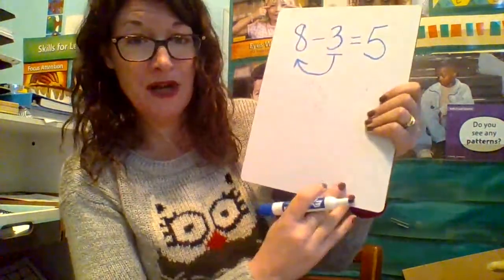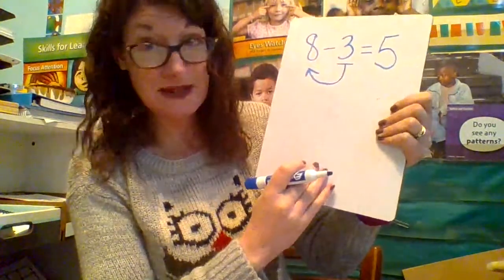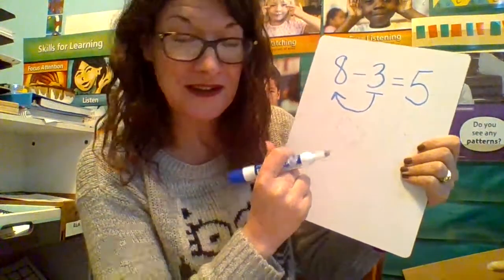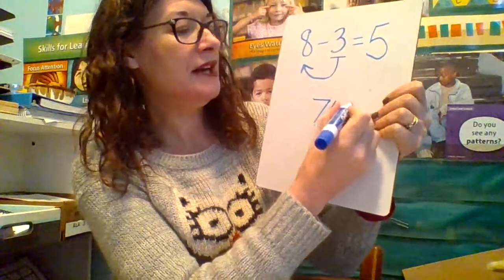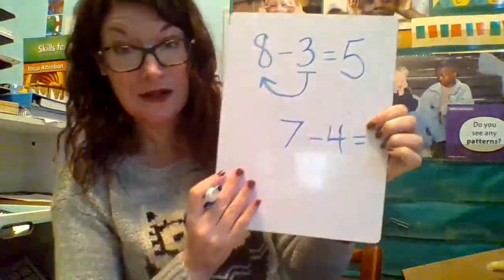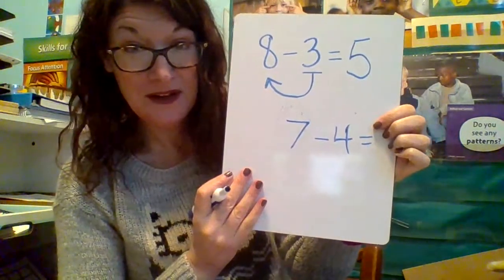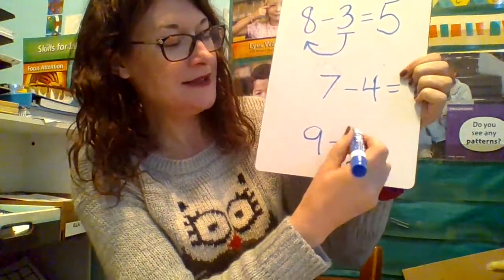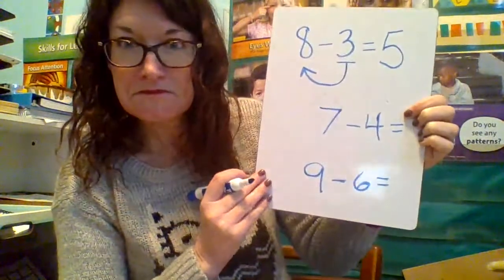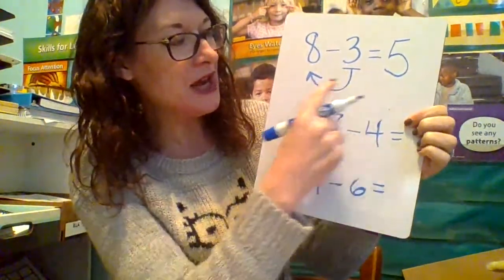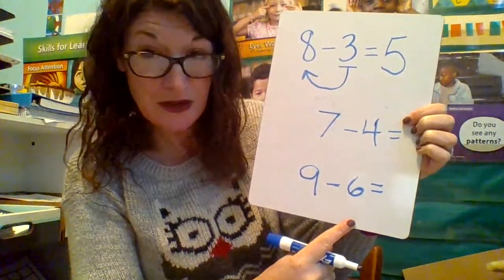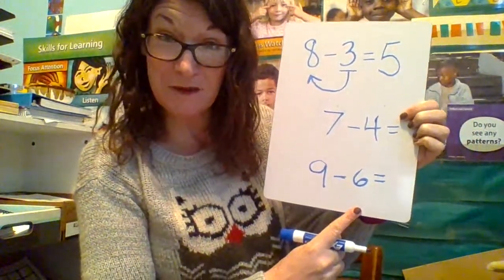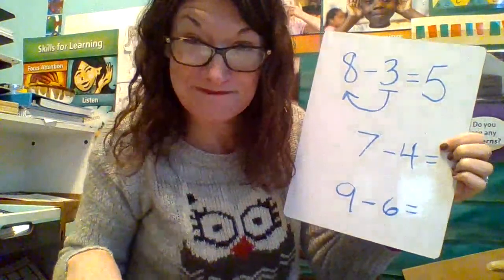I'm going to give you a couple more equations to solve. I'd like you to solve these next two using this strategy, take a picture of it, and send it into your teacher today. Here's the next one: 7 minus 4. And one more: 9 minus 6. Go ahead and try to use the counting on strategy with these two equations. I hope you had a wonderful time learning the counting on strategy with subtraction, and I'll see you soon in math groups. Bye!